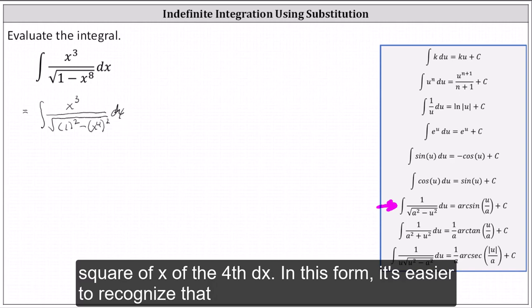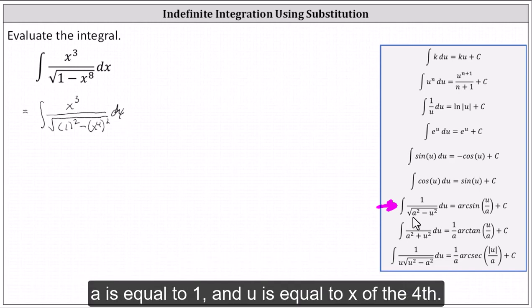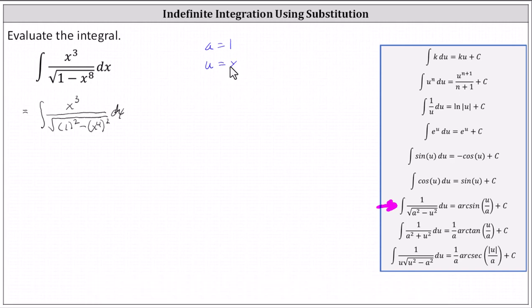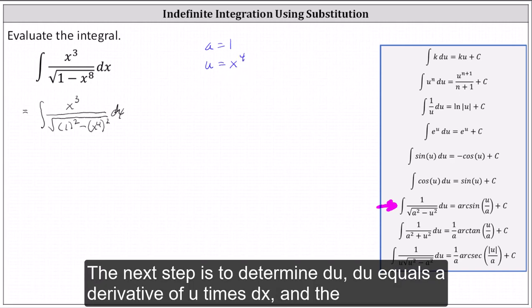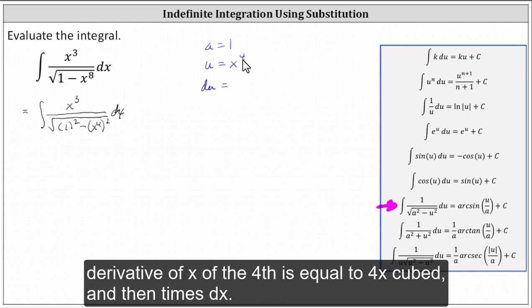In this form, it's easier to recognize that a is equal to one and u is equal to x to the fourth. The next step is to determine du. Du equals the derivative of u times dx, and the derivative of x to the fourth is equal to four x cubed and then times dx.